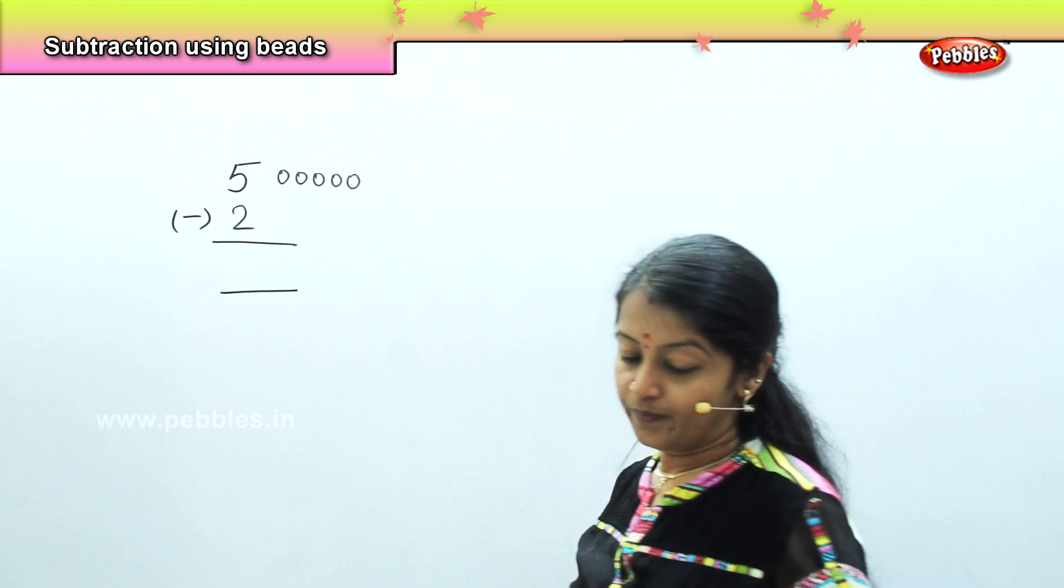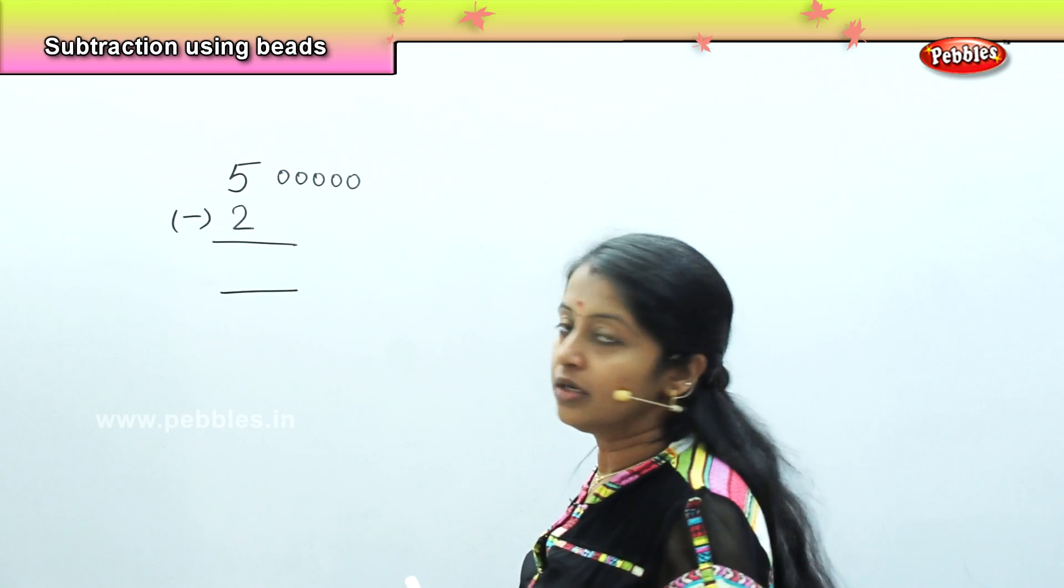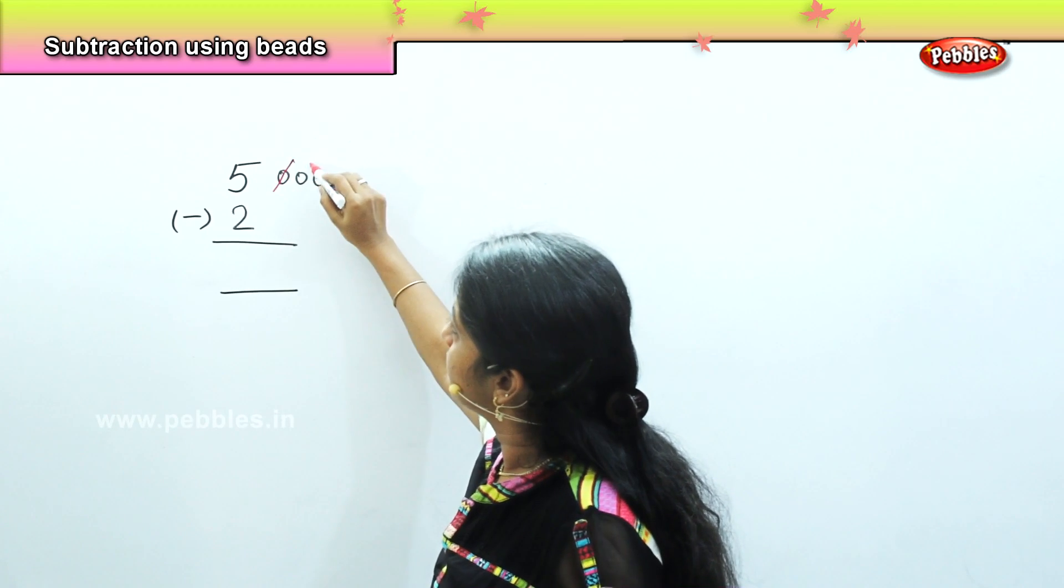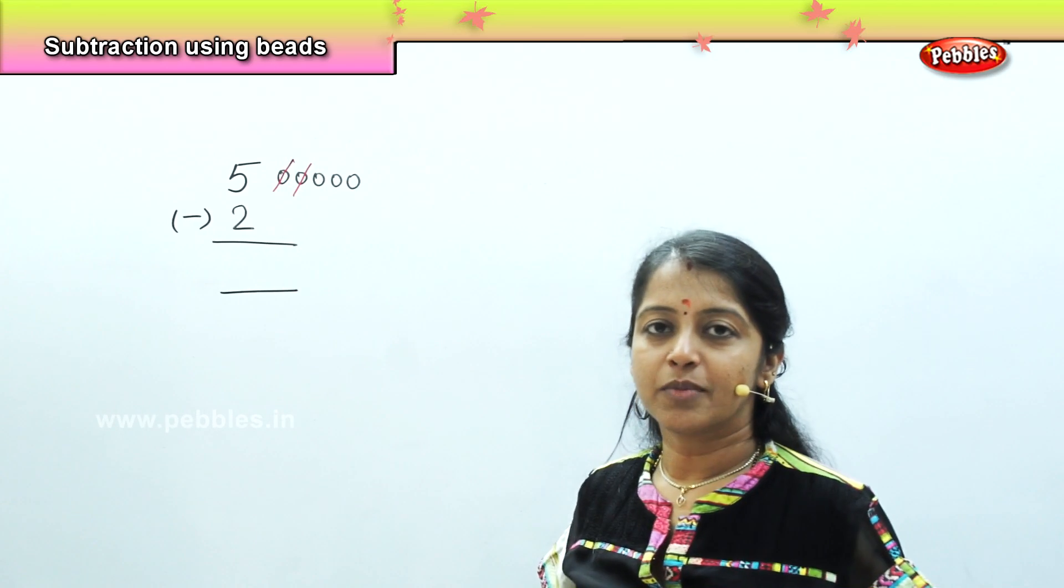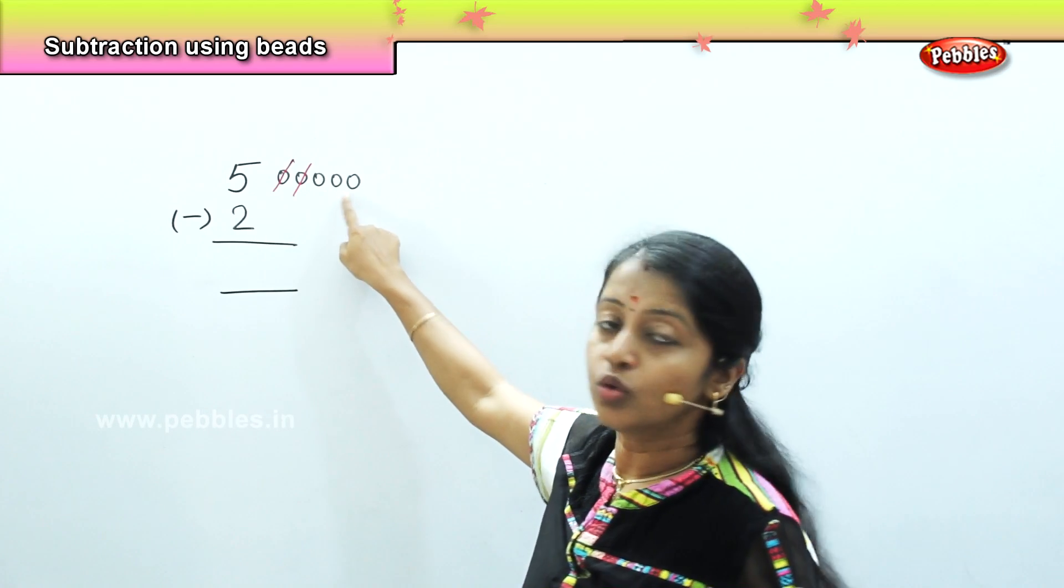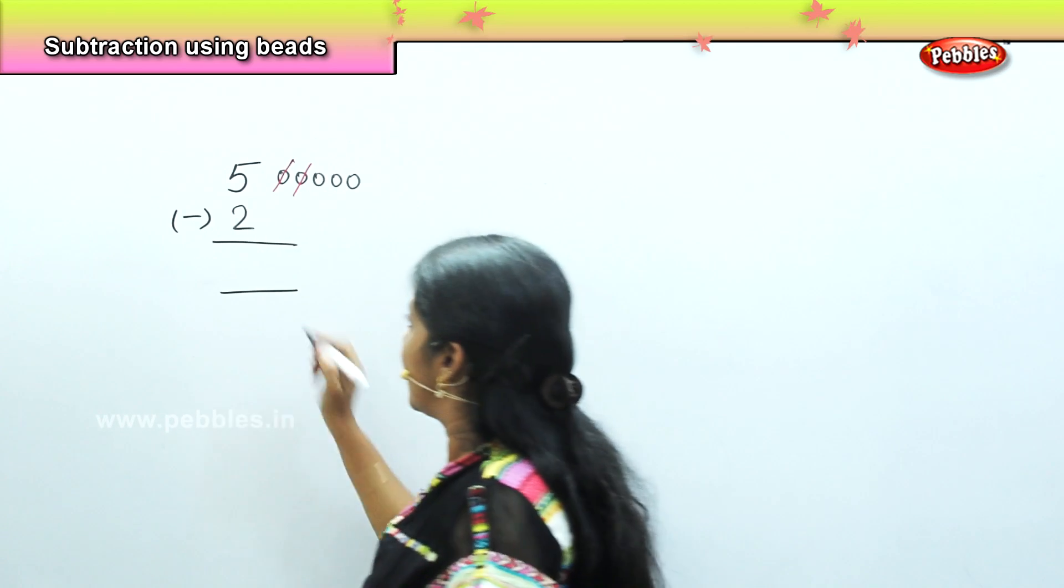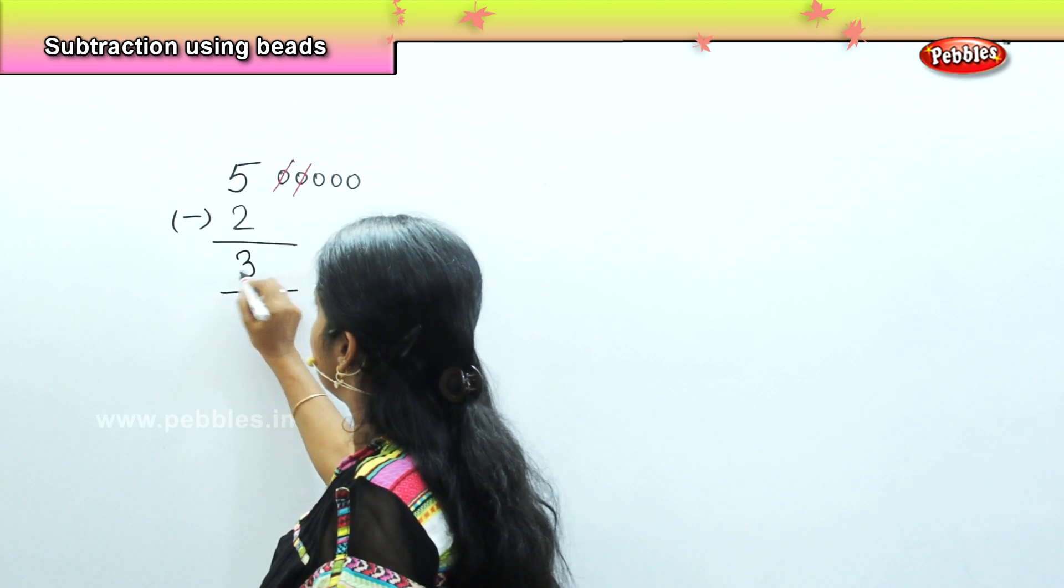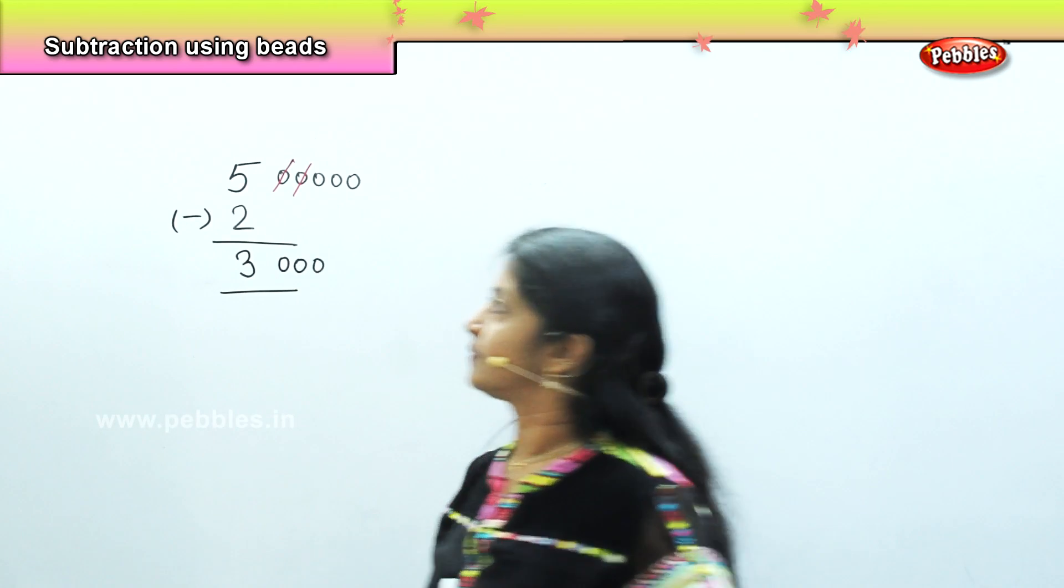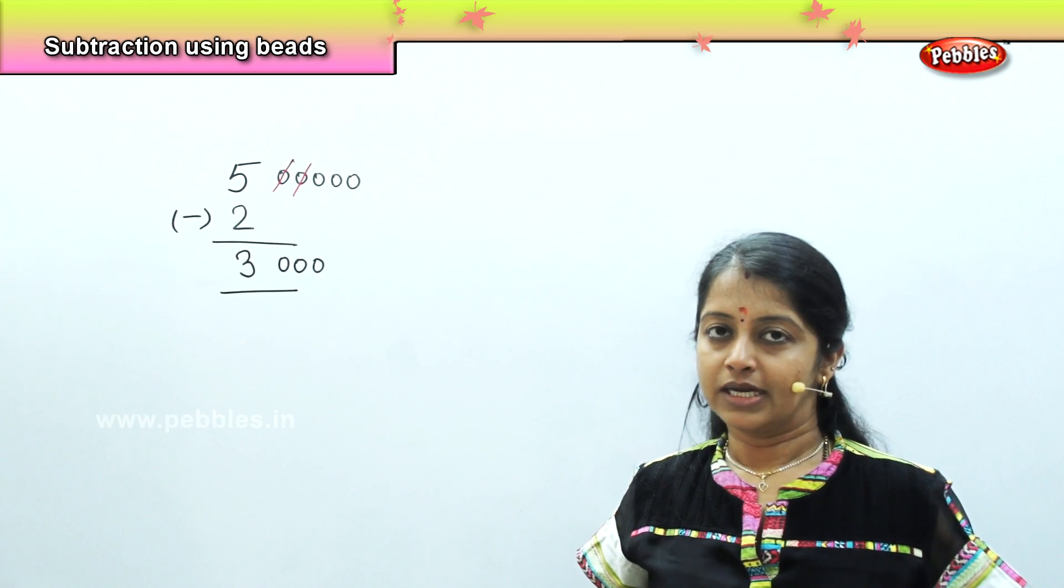Yes. Now I need to strike here 2 beads. So I will strike here 1, 2. What is the number of beads remaining with me? Just count and tell: 1, 2, 3. So my answer is 3 and I will draw here 3 beads. Is it clear, children?